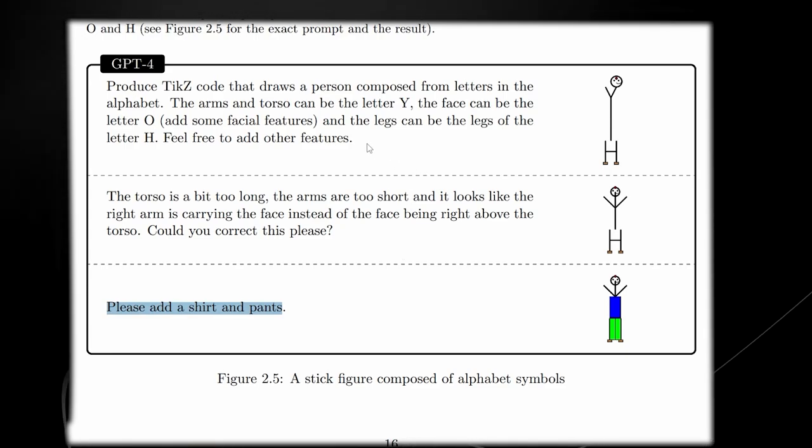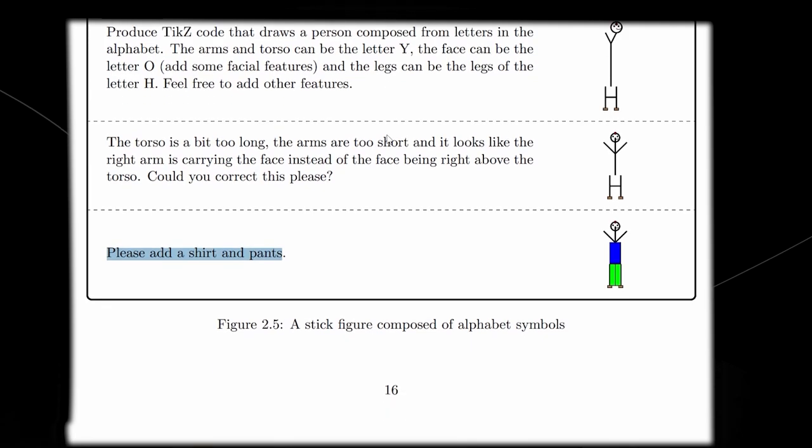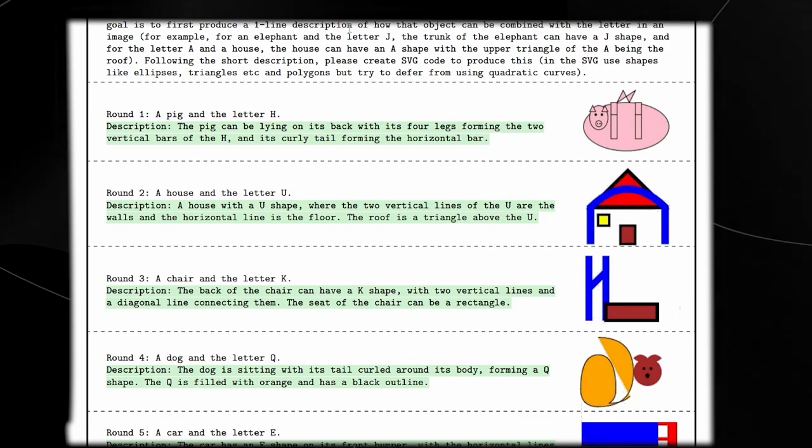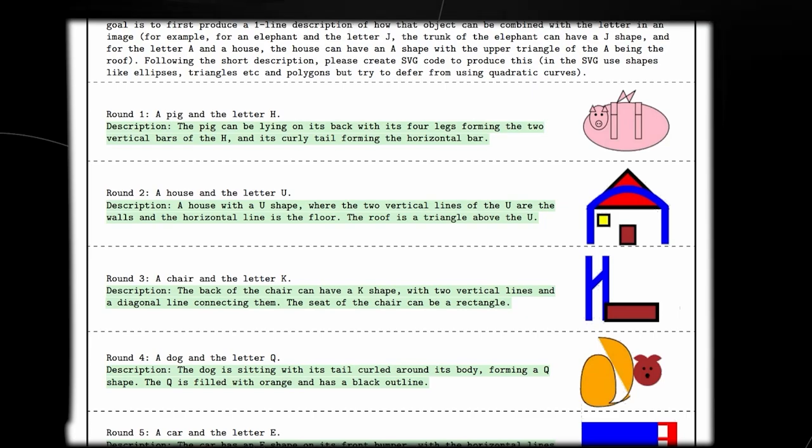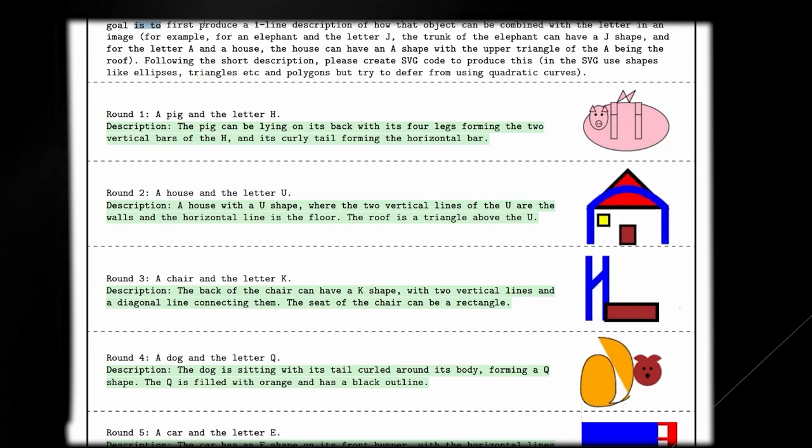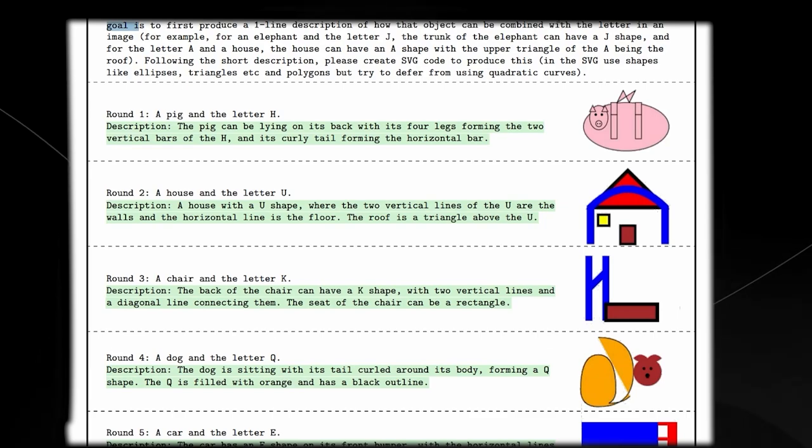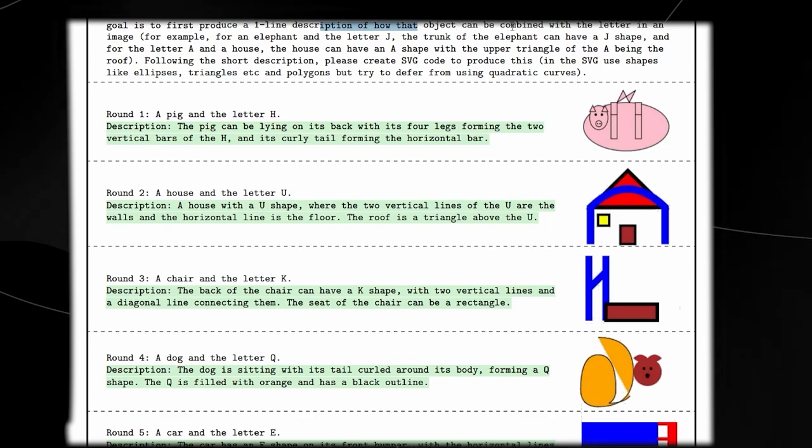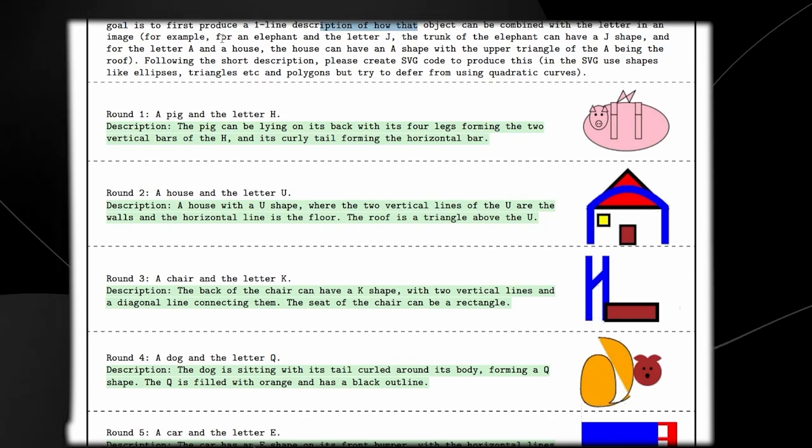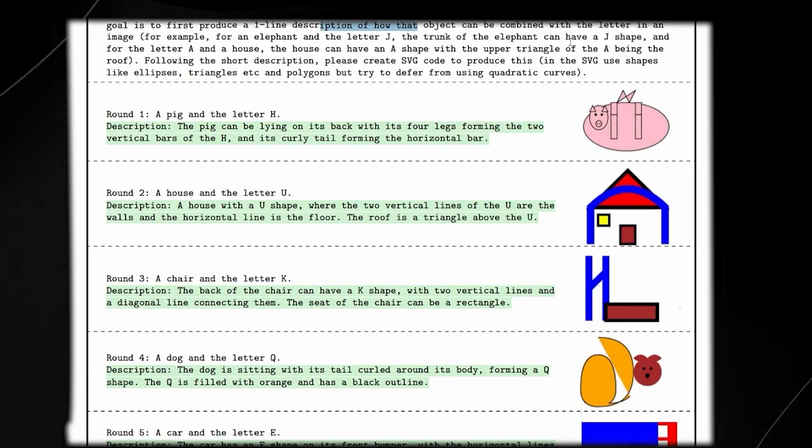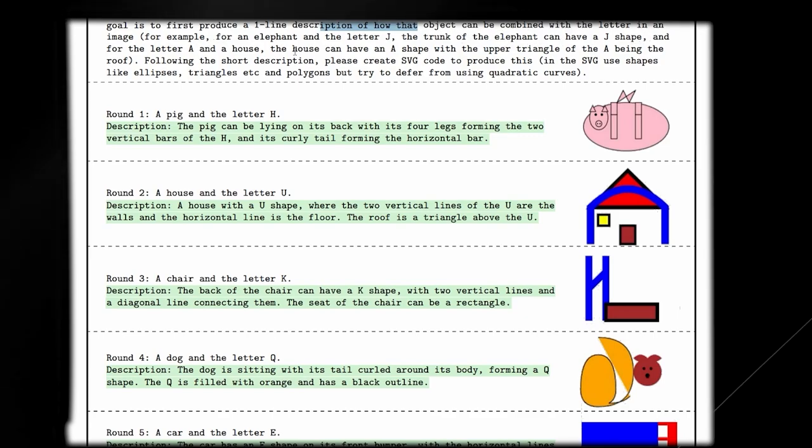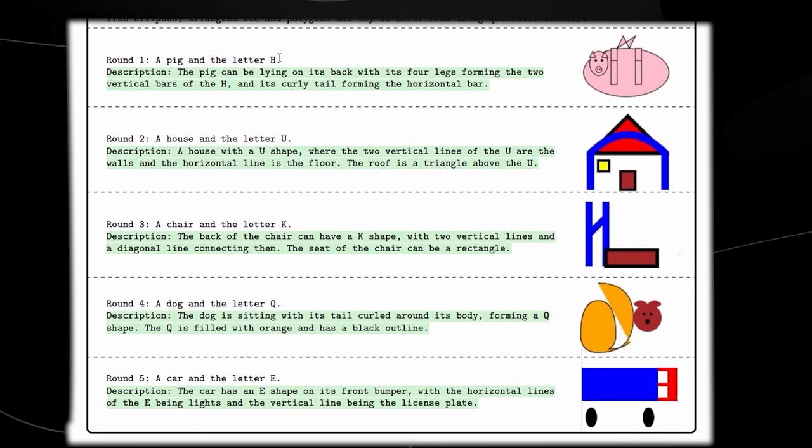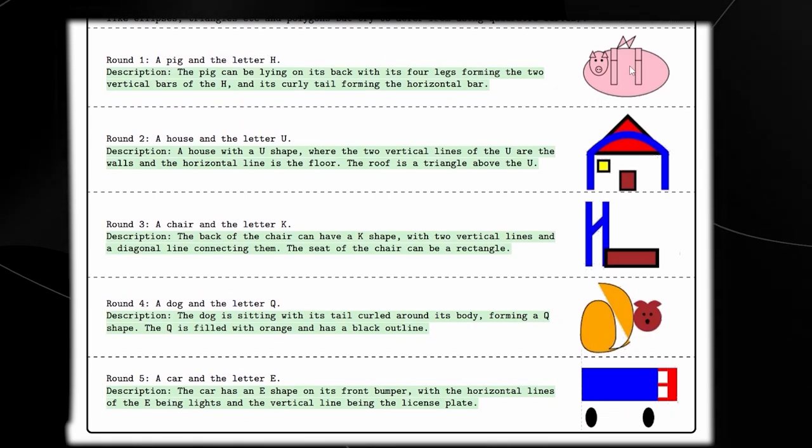Remember, this is not a program that's trained on image data at all. This is a large language model. Another example here doesn't only show GPT-4's ability to make these images, it shows the ability to make these images in a rather difficult manner. The prompt they gave was: you'll be given a name of an object, such as a car, a charred elephant, and a letter in the alphabet. Your goal is to produce a one line description of how that object can be combined with the letter in an image. For example, an elephant and the letter J, the trunk of the elephant can have a J shape.